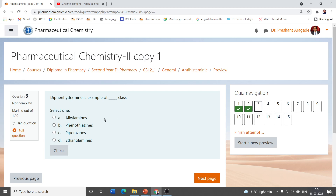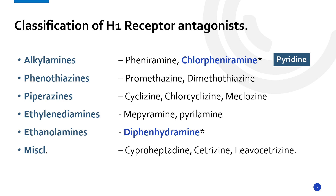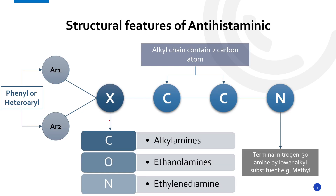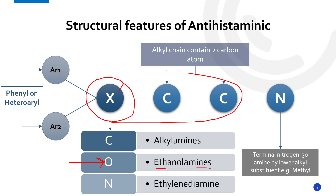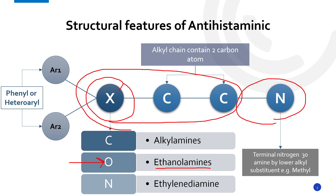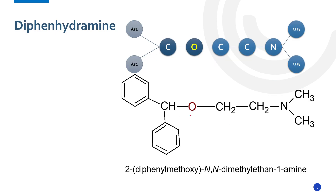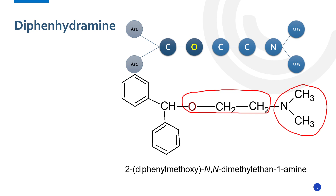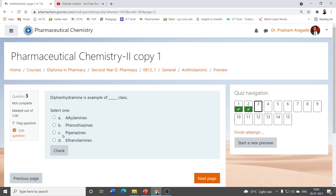Diphenhydramine is an example of which class? Options are alkylamines, phenothiazines, piperazines, and ethanolamines. From the classification, diphenhydramine belongs to the ethanolamine class. Looking at the structural features of antihistaminic agents: when X equals O, the linkage is O-C-C, giving an ethanol portion and an amine portion. In diphenhydramine, the chain is O-CH₂-CH₂ — this is the ethanol part connected to the amine — so the correct answer is ethanolamines.